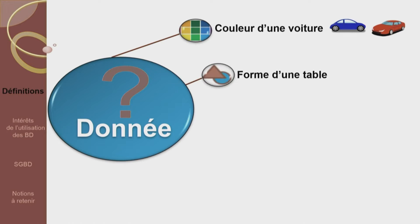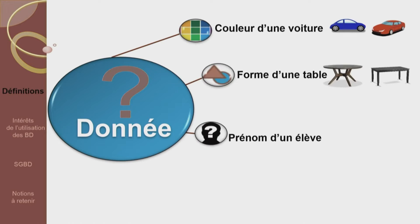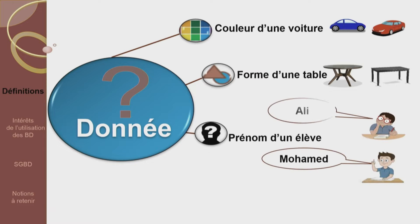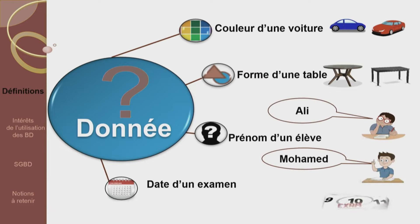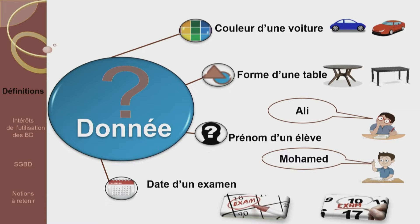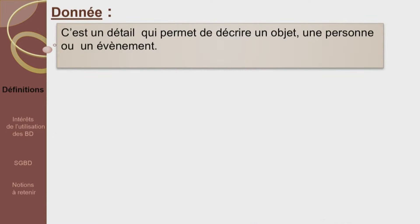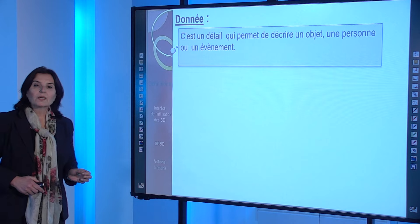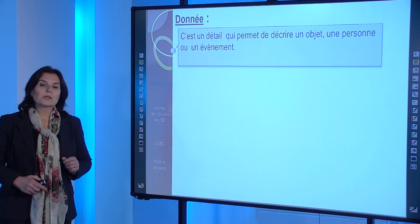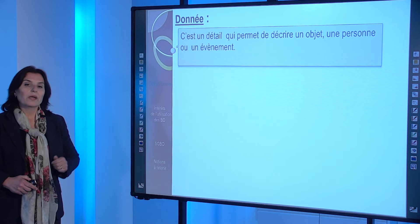Une donnée, c'est la couleur d'une voiture, la forme d'une table, le prénom d'un élève, la date d'un examen. Une donnée sera donc tout détail permettant de décrire un objet, une personne ou un événement.